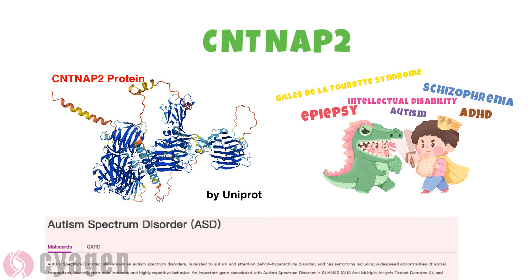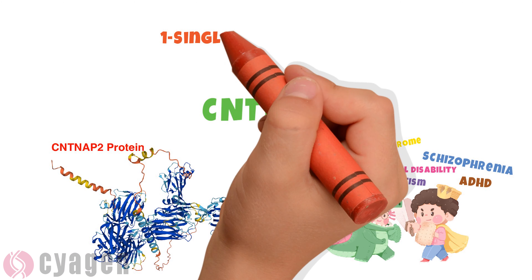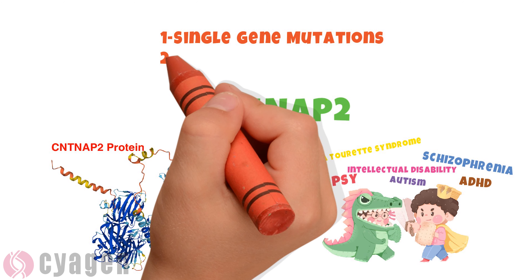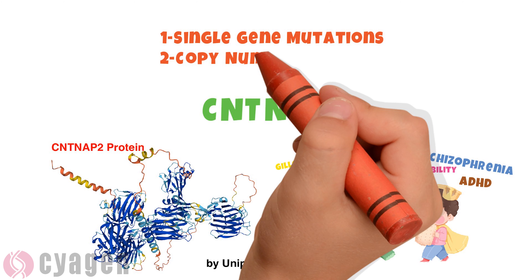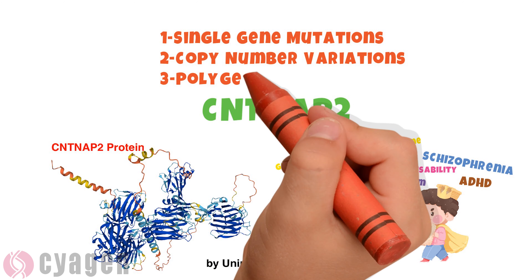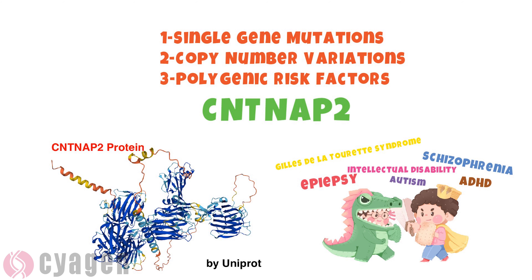Moreover, genetic abnormalities associated with ASD can be divided into three categories: single gene mutations, copy number variations, and polygenic risk factors.